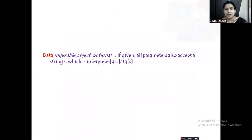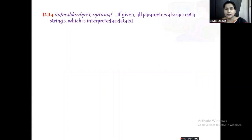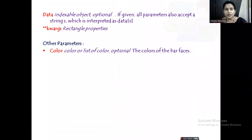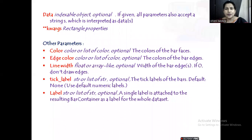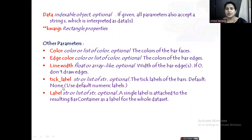We also have other parameters: data, which is an indexable object and is optional; and kwargs for rectangle properties. Other parameters we have used earlier include color, edge color, line width, and tick label. The tick label is none by default, and whatever values we supply for x and y are taken as the label values. If you want to give some other value, you can specify the label; otherwise you can simply omit these values.